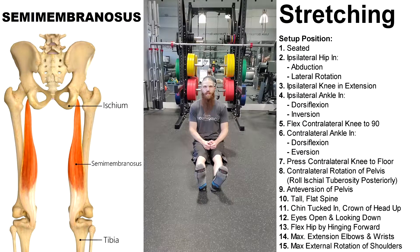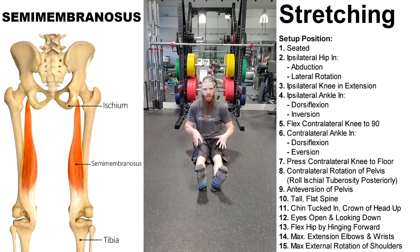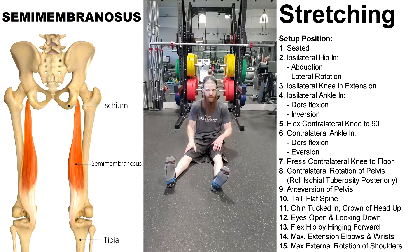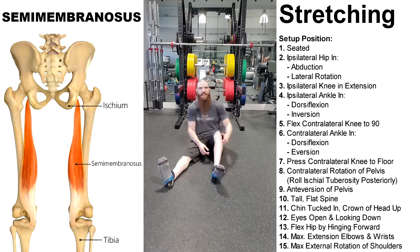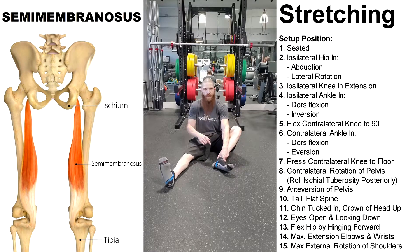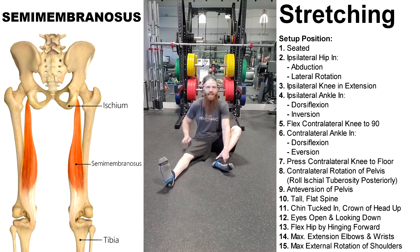Now we're going to take you through a myofascial stretching exercise for the semimembranosus muscle. We're going to be in a seated position, going into abduction of the femur by placing the heel outside of the hip. We then go into maximum extension of the knee, dorsiflexion of the ankle, inversion of the ankle, then lateral rotation of the femur by pointing the toes out toward the side. With the contralateral leg, we flex the knee to 90 degrees, go into dorsiflexion of the ankle, inversion of the ankle, and press the knee down toward the ground.